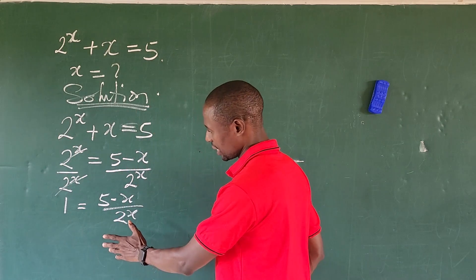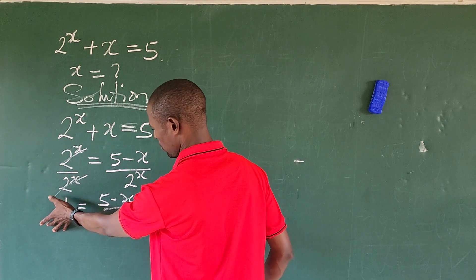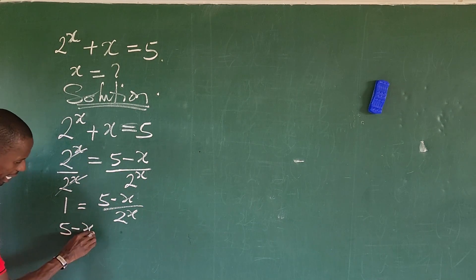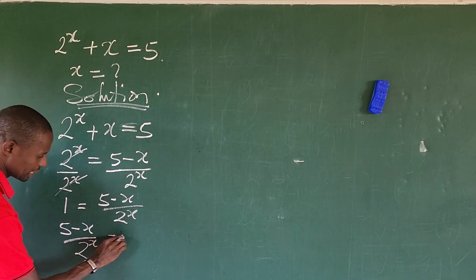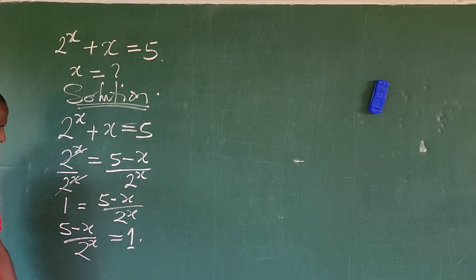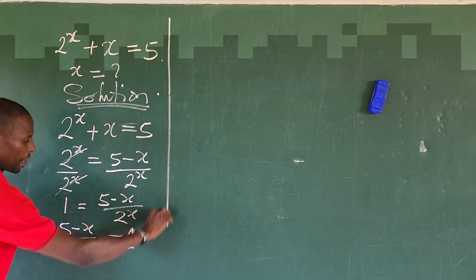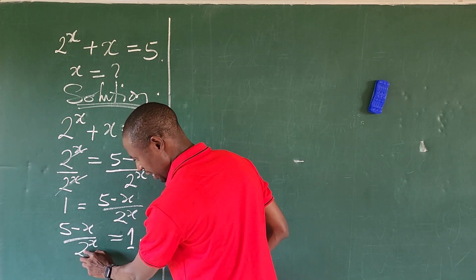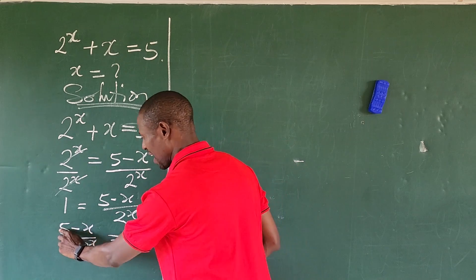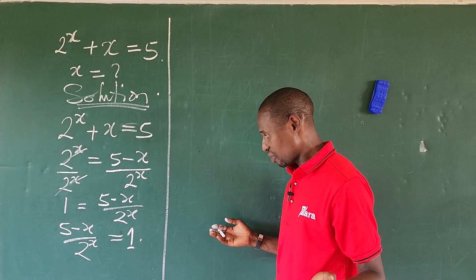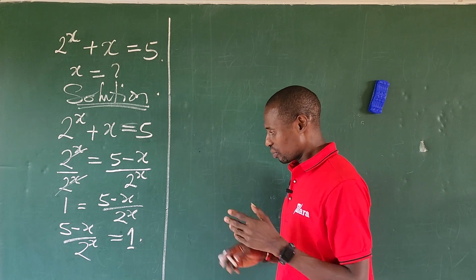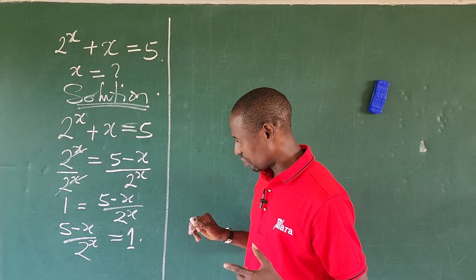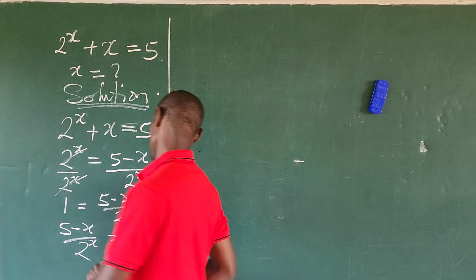We can rearrange this: (5 minus x) over 2 to the power of x equals 1. Now I want to manipulate the exponent in the denominator so that I can have 5 minus x appear in the exponent as well. What I'm going to do is multiply both sides of the equation by 1 over 2 to the power of negative x, and see what happens.